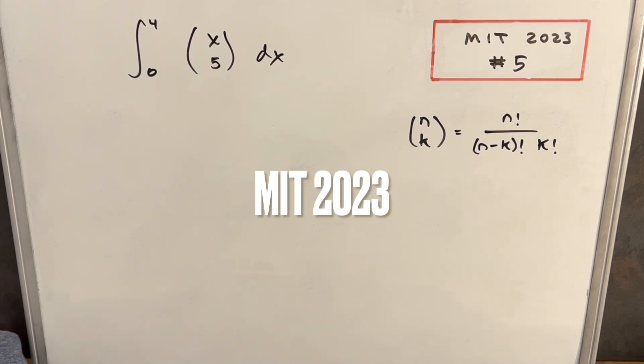Hey, I have this problem on the board from MIT 2023. This was problem number five. We have the integral from zero to four of x choose five dx.